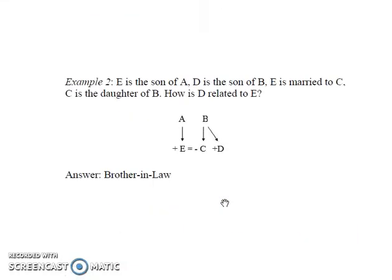Coming to the last example, let E be the son of A, D is the son of B and E is married to C. C is given as the daughter of B. Then how is D related to E?